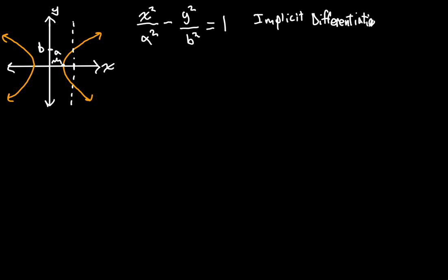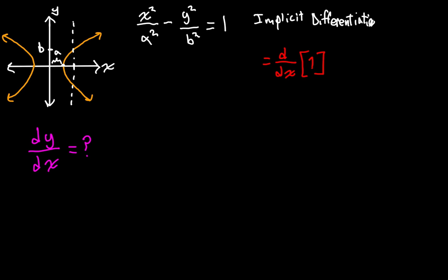I'm going to take the derivative of both sides. We're trying to find the slope at any given point in the form dy/dx — we want to know what our dy/dx is. We're using implicit differentiation, similar to how we did it in our ellipse videos. So we're taking the derivative with respect to x of 1, and that's equal to the derivative with respect to x of x squared over a squared minus y squared over b squared.